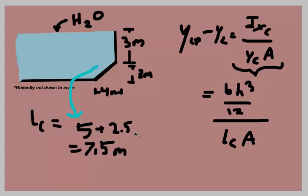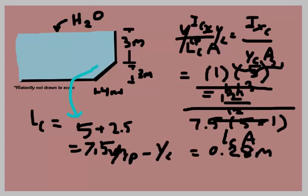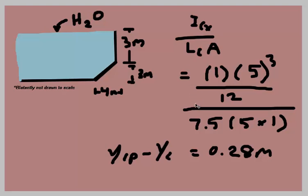So we plug that in and we get 1 as your base, 5 was your height, so 5 cubed divided by 12 all over the L sub C that we've just found, 7.5 times 5 times 1. And we plug that into a calculator or very strong mental math, you get 0.28 meters as your distance. And that's how you solve a hydrostatics problem that revolves around an inclined plane. Thanks for watching.